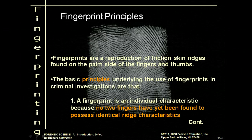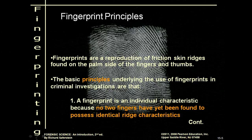Fingerprints are the reproduction of friction skin ridges found on the palm side of your fingers and thumbs. Your fingerprints actually start developing when you were about 10 weeks in gestation, and they're completely formed by the 24th week. You will have the exact same fingerprint pattern for the rest of your life — they will just grow larger as you grow larger.